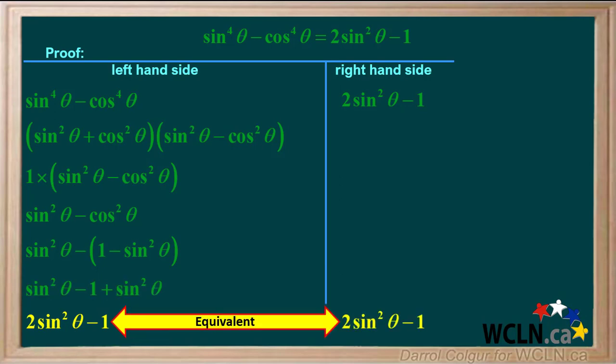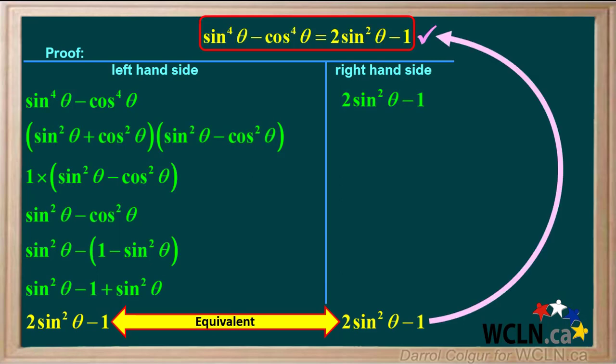We see that the expression on the left is equivalent to the expression on the right. So this proves that sine to the fourth theta minus cos to the fourth theta is equal to two sine squared theta minus one is an identity.